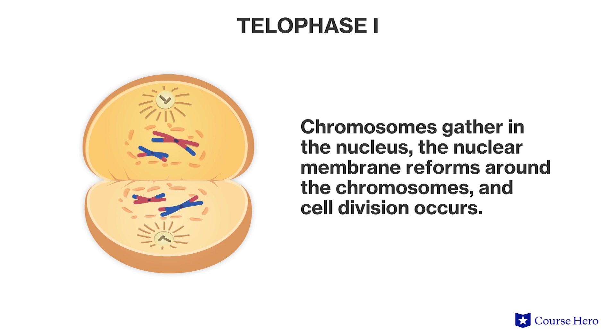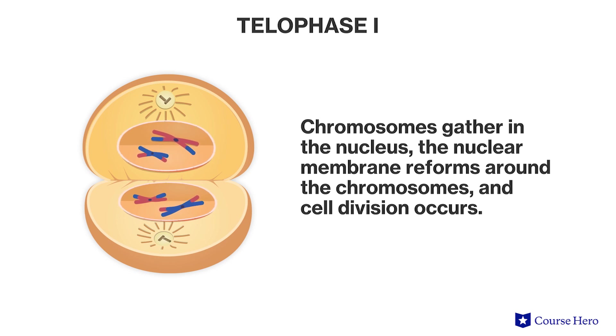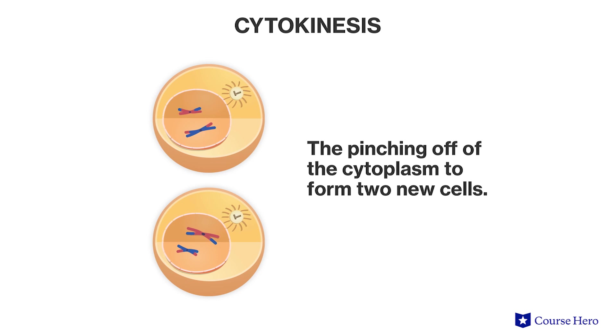The last phase of meiosis one, telophase one, is characterized by the arrival of chromosomes at the opposite poles of the cell. A new nuclear envelope forms around each set of chromosomes, and this occurs simultaneously with cytokinesis, or the pinching off of the cytoplasm to form two new cells. There's only a brief interphase between telophase one and prophase two, used mostly as a resting stage for the cells, and no chromosome duplication happens.